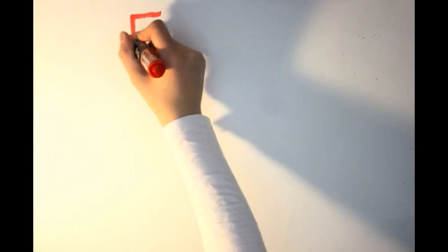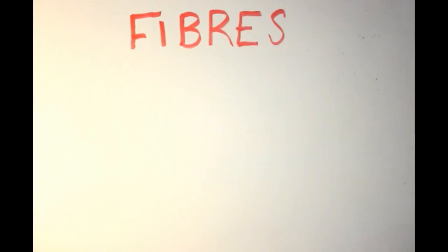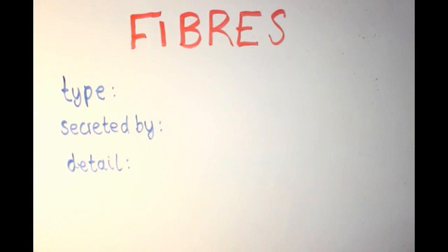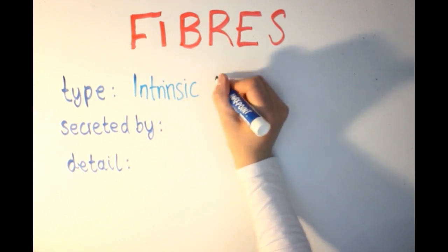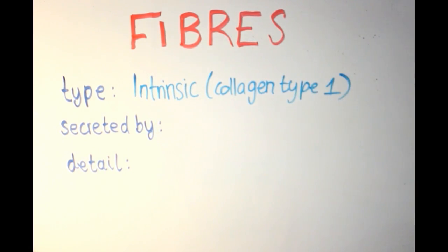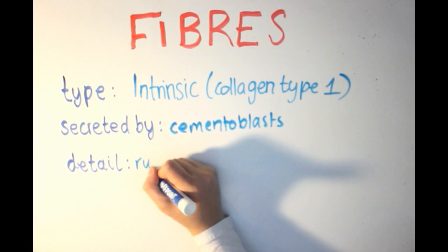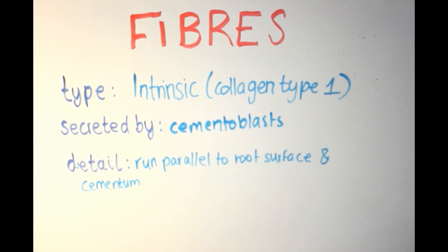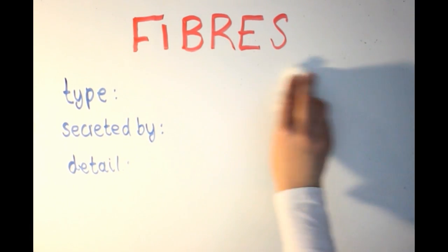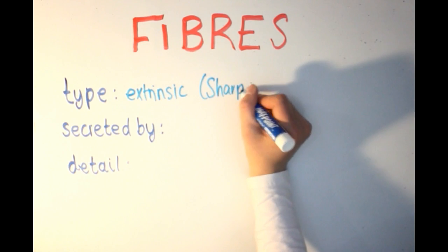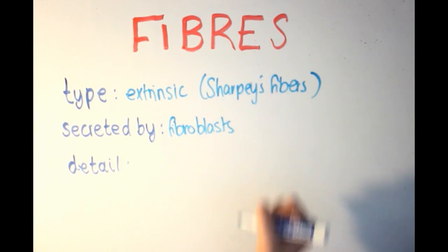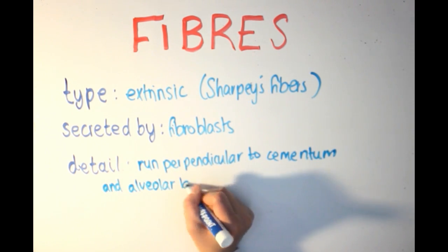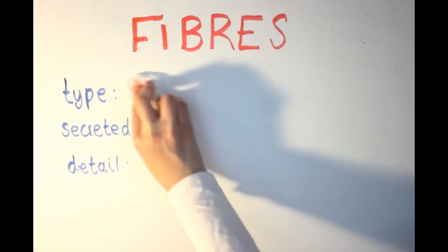As we discussed, cementum contains both cells and fibers. First, the intrinsic fibers are made up of type 1 collagen and are secreted by cementoblasts. They run parallel to the root surface and are smaller than the extrinsic fibers. Second, extrinsic fibers, also known as Sharpey's fibers, are secreted by fibroblasts. They run perpendicular to both the cementum surface and the alveolar bone surface. Mixed fibers are in a category of their own as they are neither extrinsic nor intrinsic.